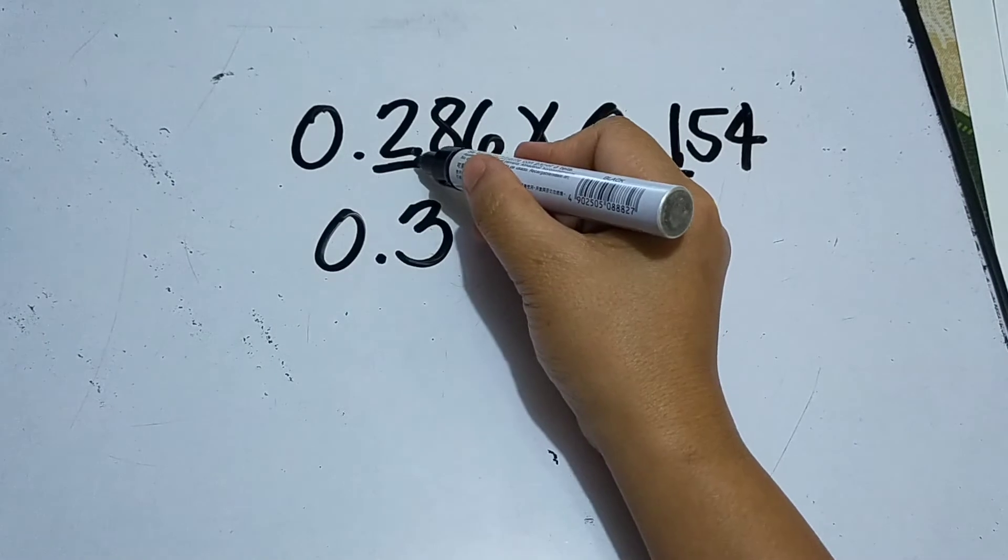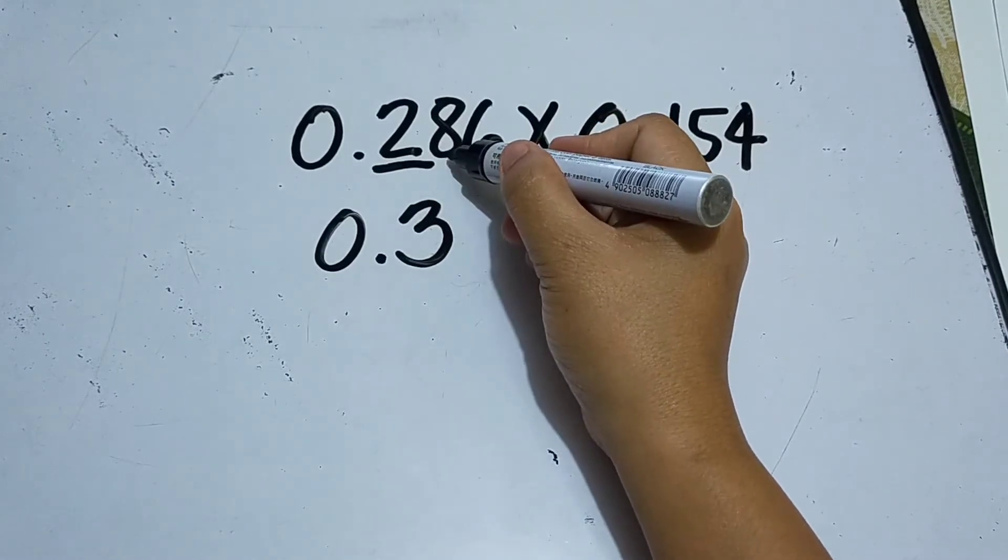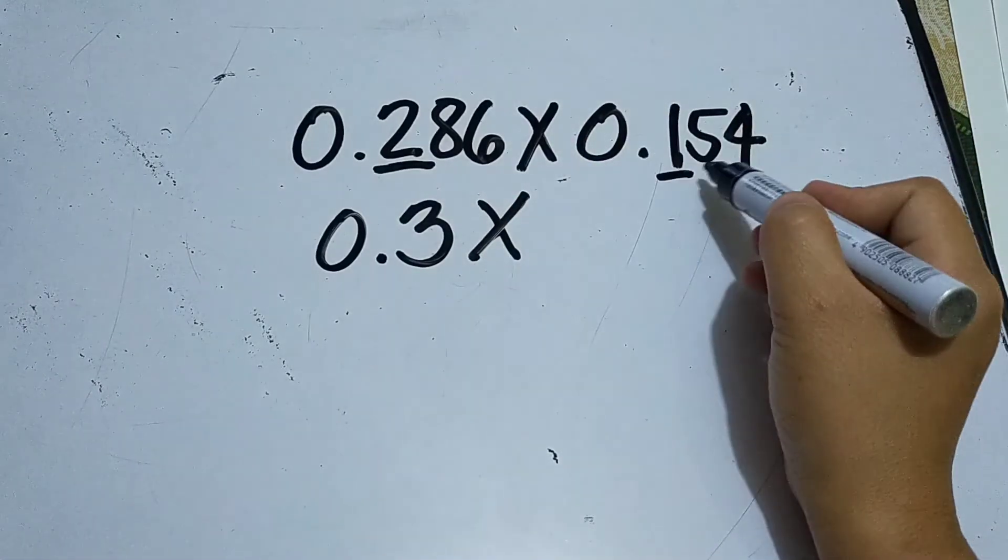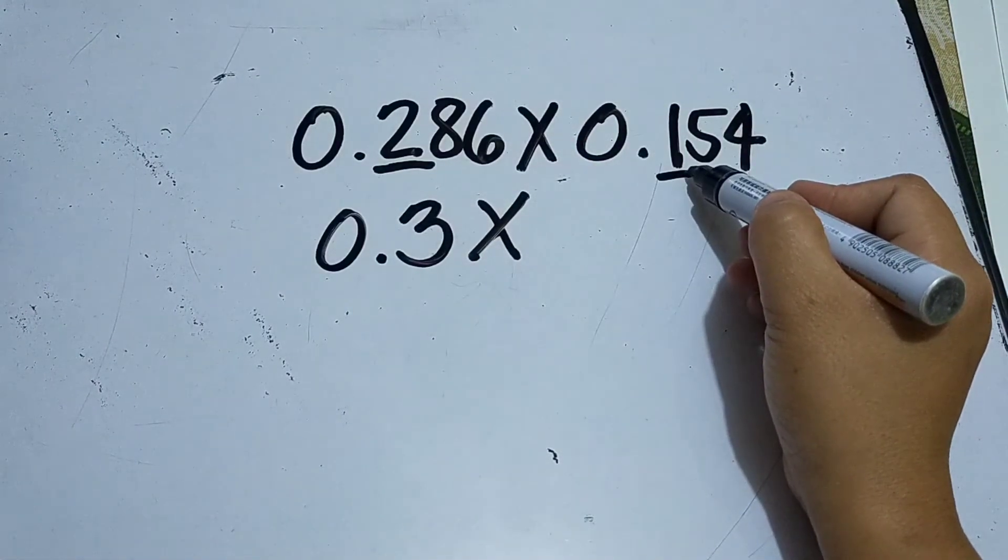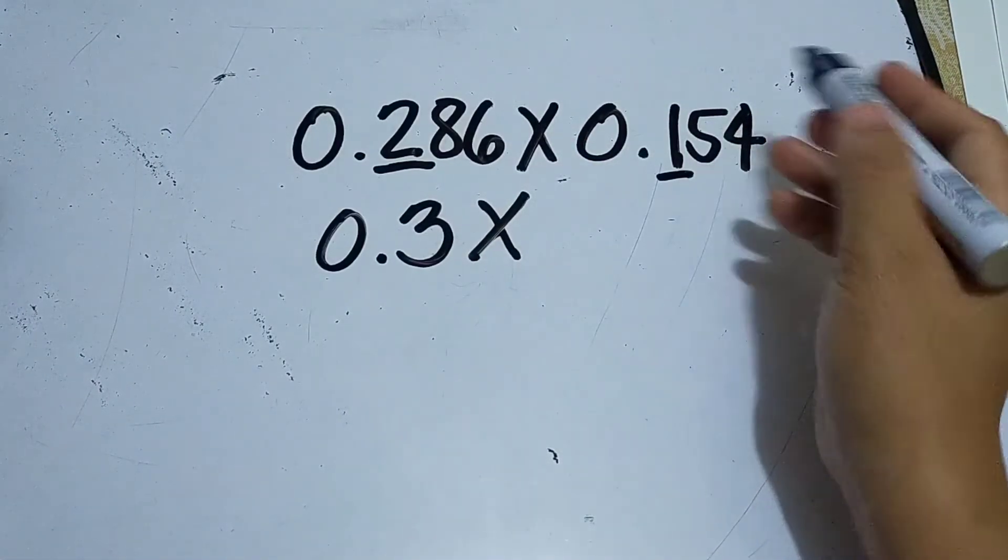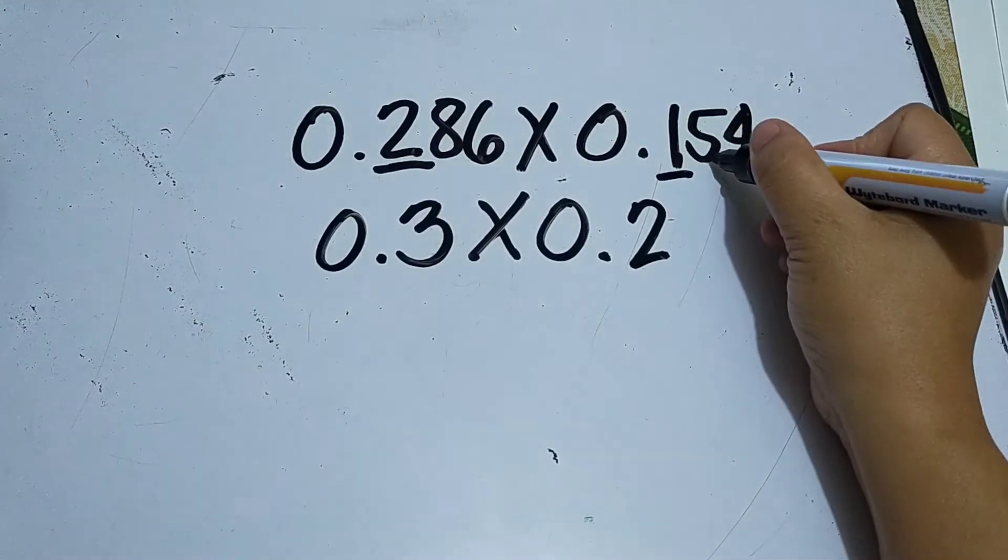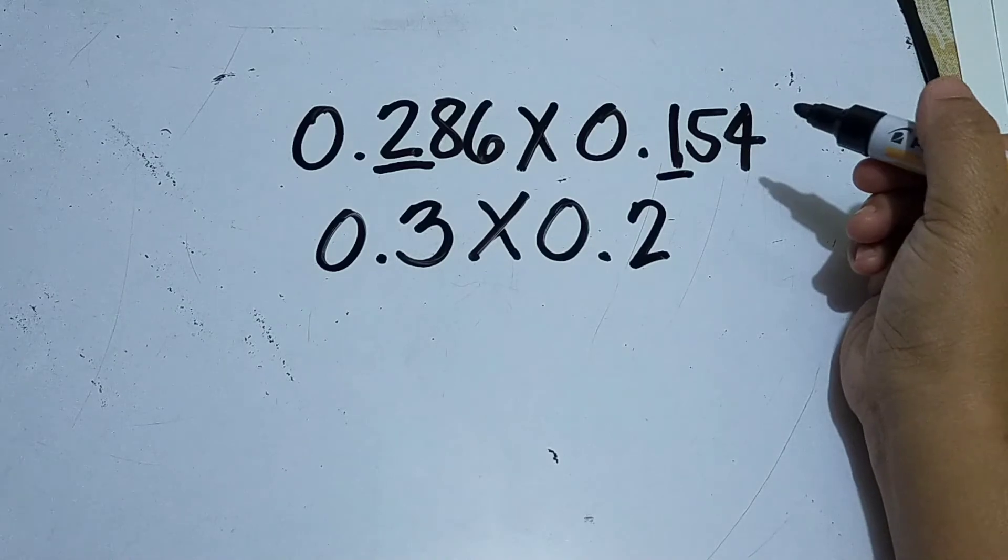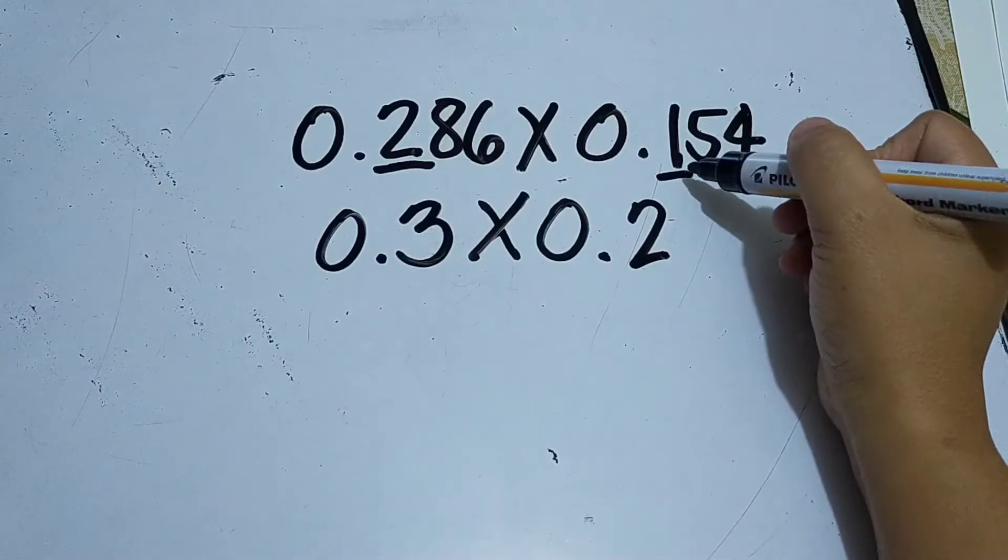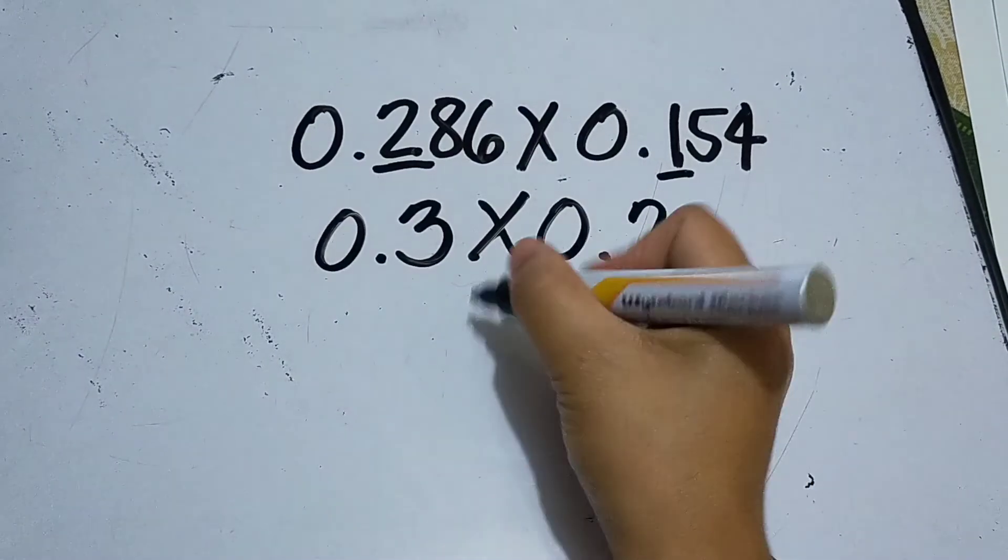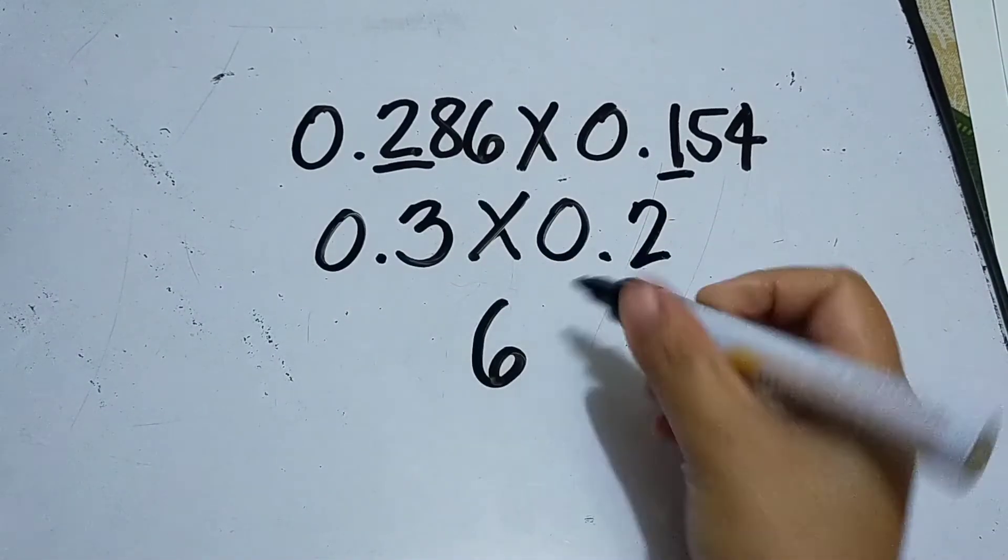Tenths. Why? The digit to the right of two is eight, so we round up. And then this one becomes two tenths. Why two tenths? Because the digit to the right of one is five, so the rule when it's five or higher is round up.